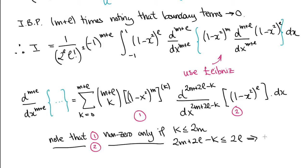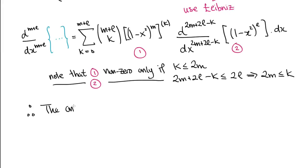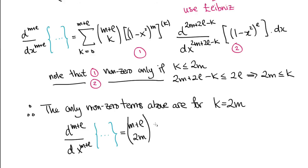which is 2L. These two constraints together tell us that K is less than or equal to 2M and K is greater than or equal to 2M, so the only non-zero term in the above is for K is equal to 2M. This gives us the fact that the M plus Lth derivative of the curly brace is equal to this single term.